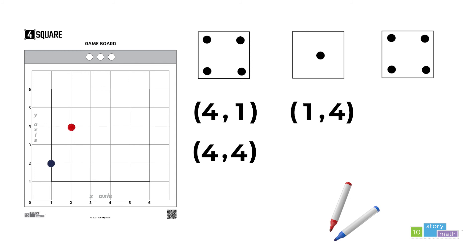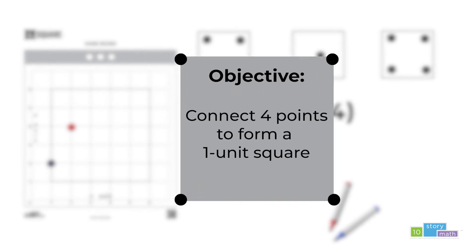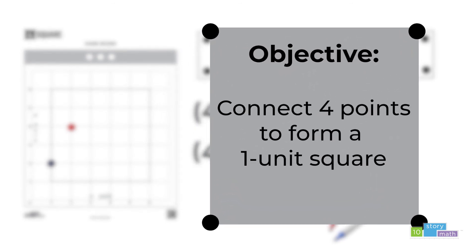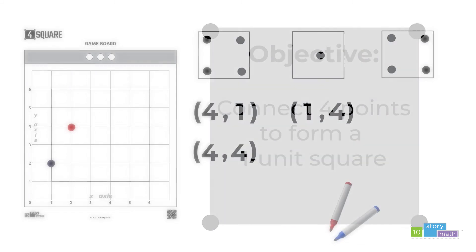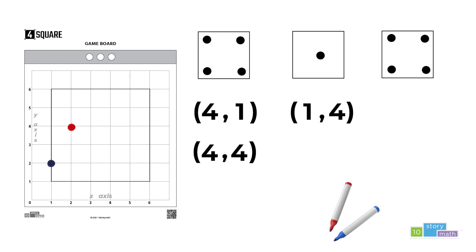The red team has an important decision to make. Which of these ordered pairs should they use? Well, in making that decision, they must consider the objective of the game. The objective in Foursquare is to connect four points in order to create a square that is one unit on each side.